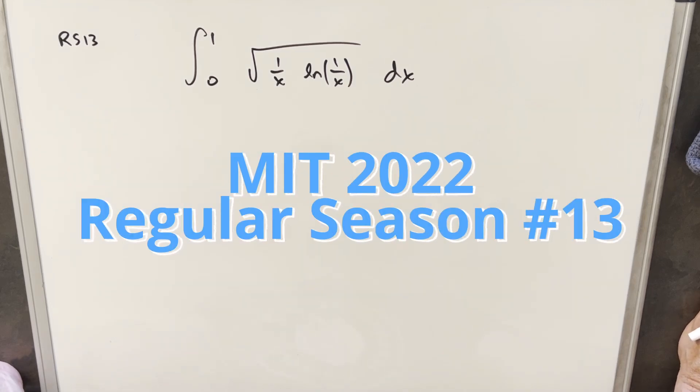Hey, we have here another integral. This one's from MIT Integration B 2022, regular season, problem 13. We have the integral from 0 to 1 of square root of 1 over x, ln of 1 over x dx.